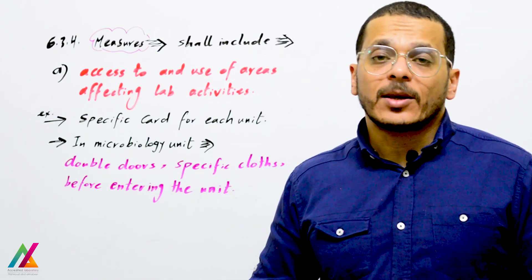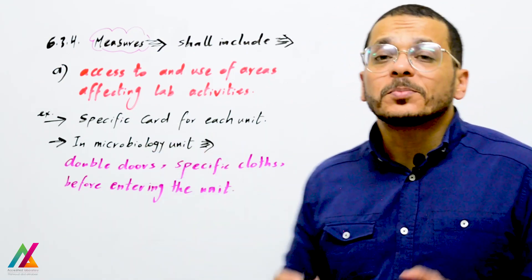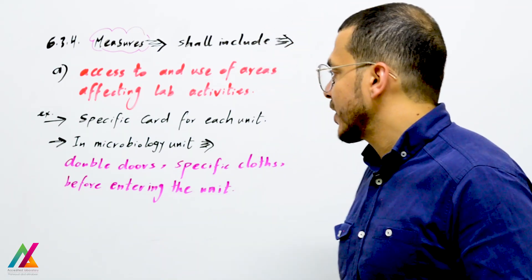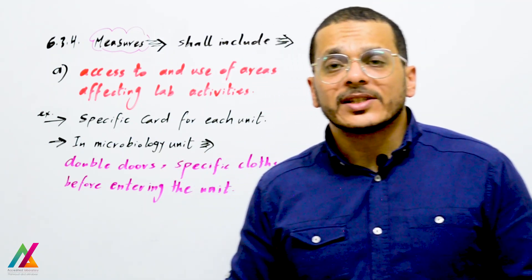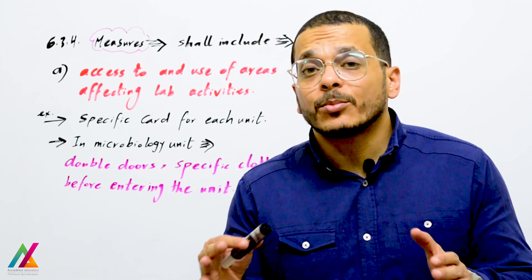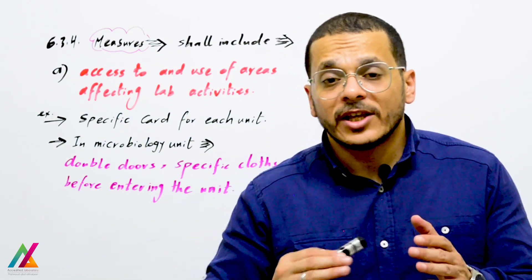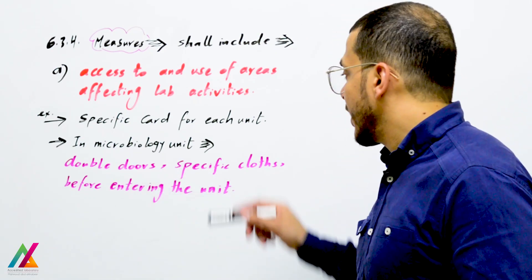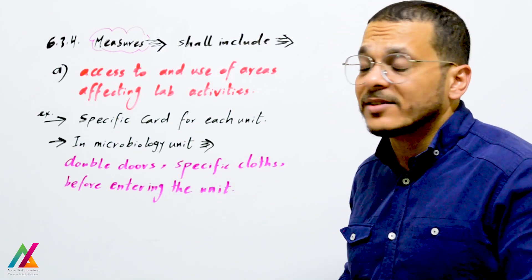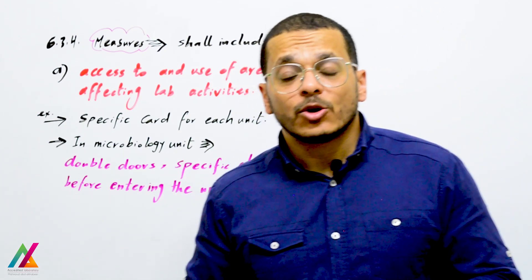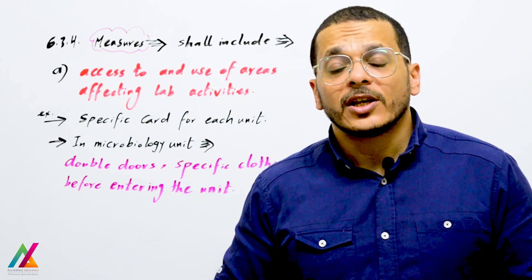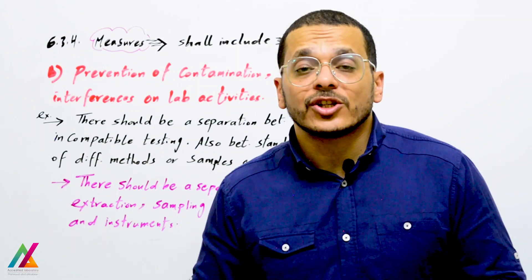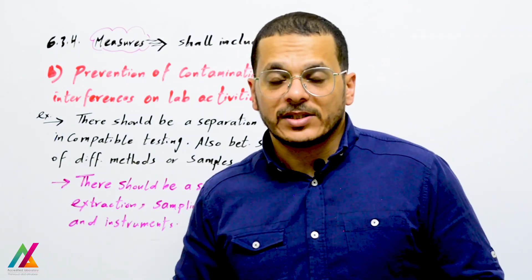For example, you can implement a specific access code for each unit to allow only personnel working inside that unit. In the microbiology unit, it is very important to prevent microbial contamination as it will affect the validity of results. You can implement double doors for the lab and specific protective clothing before entering the unit to prevent microbial contamination.